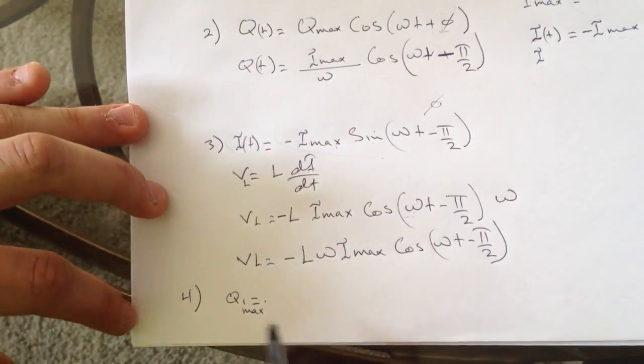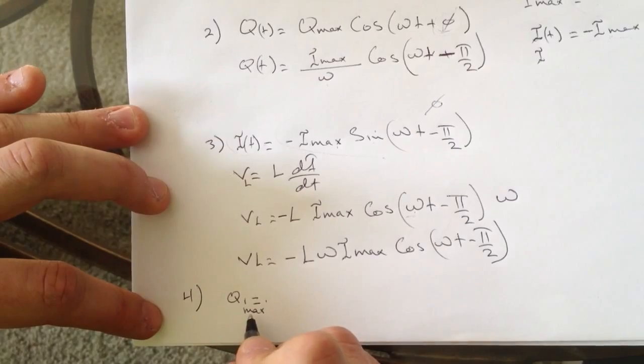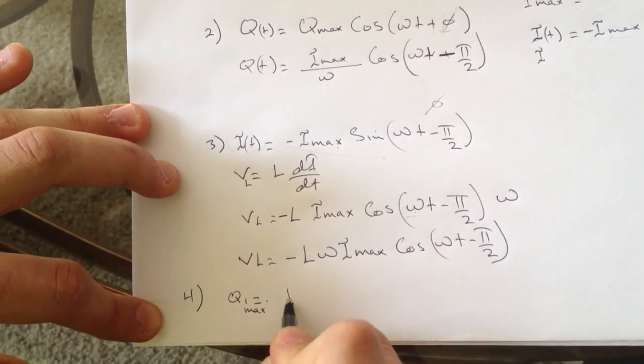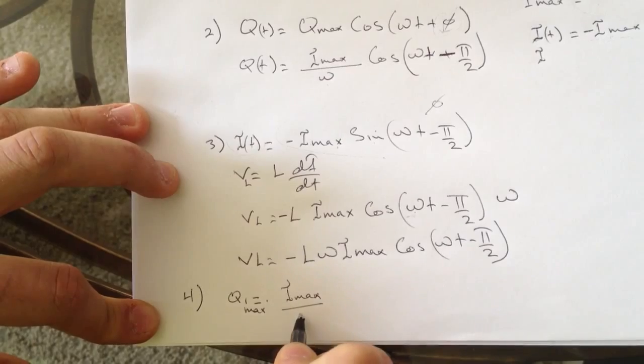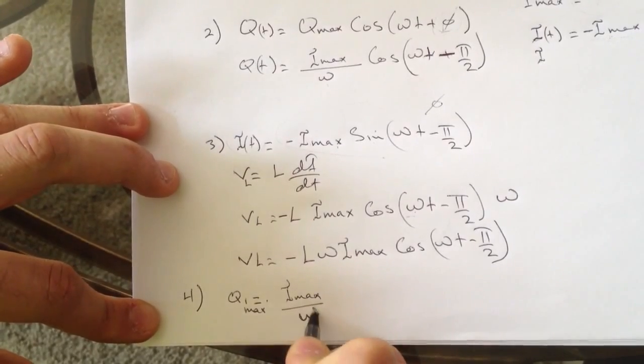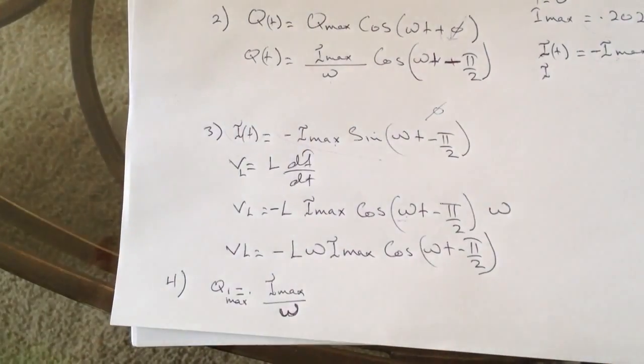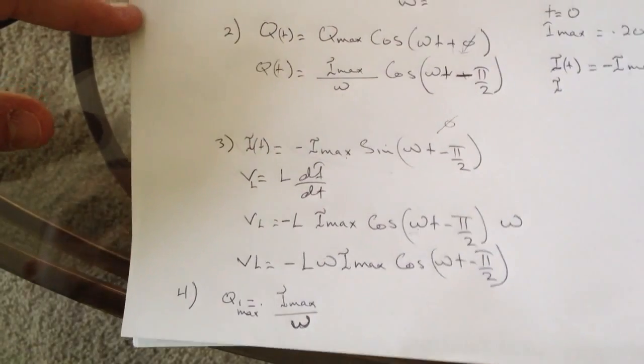So I'm going back here. The Q max is just I max over omega, and here you go, you got the answers for all these equations.